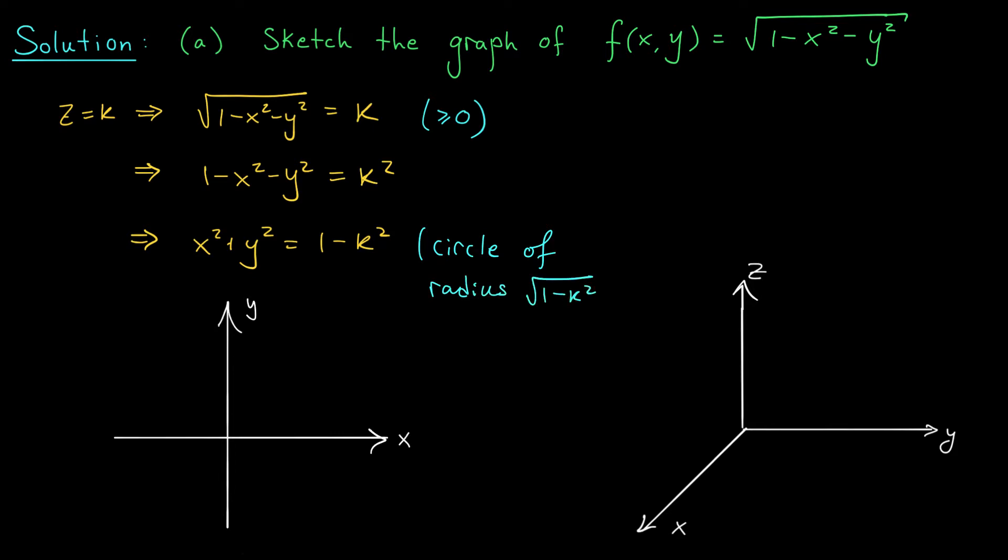It's a circle centered at the origin with radius square root 1 minus k squared. Now observe that this actually gives us another condition on k. We can't take the square root of a negative number so k is going to have to be less than or equal to 1. So if you combine that with our first constraint we see that k has to be somewhere between 0 and 1.